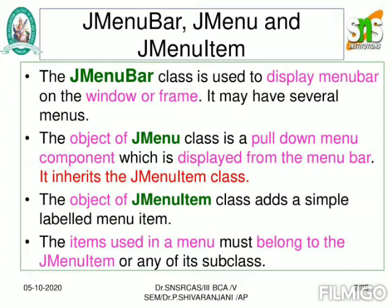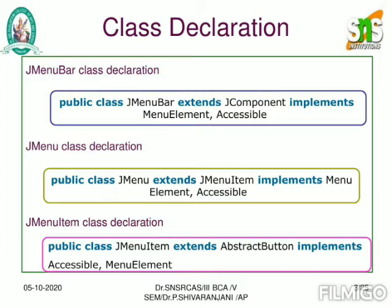JMenuBar has many menus. By the help of the JMenu class you can pull down the menu component which is displayed from the menu bar. JMenu has been inherited from the class called JMenuItem. The next object is an object of JMenuItem class, which simply adds label menu items. The items used in a menu must belong to JMenuItem or any of its subclasses.